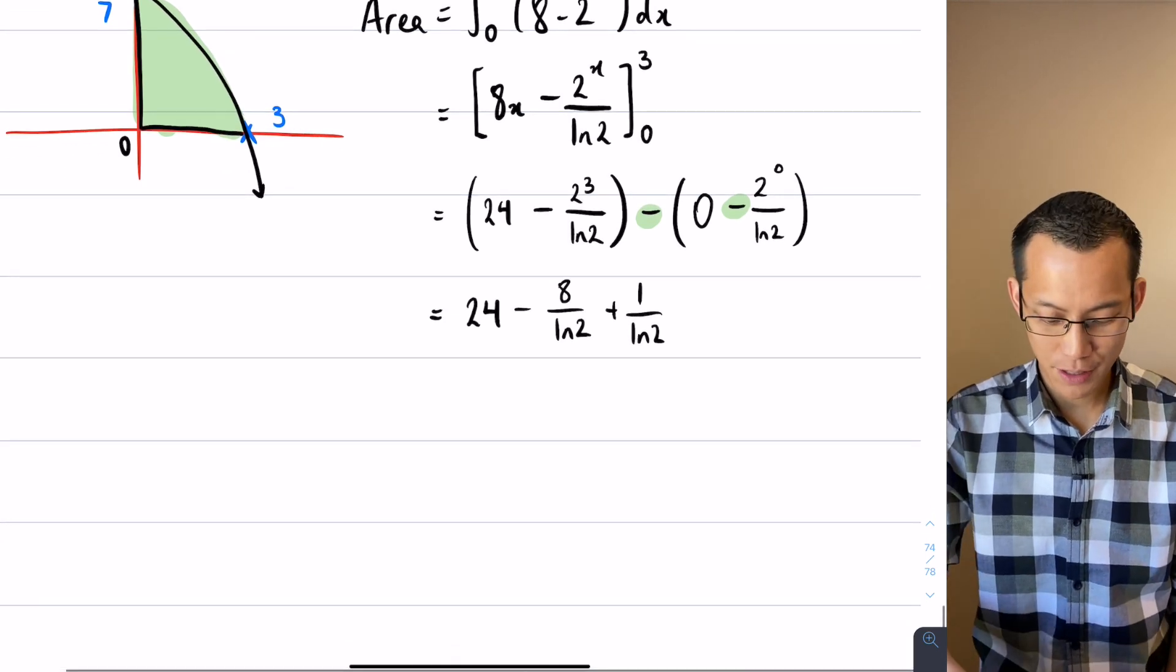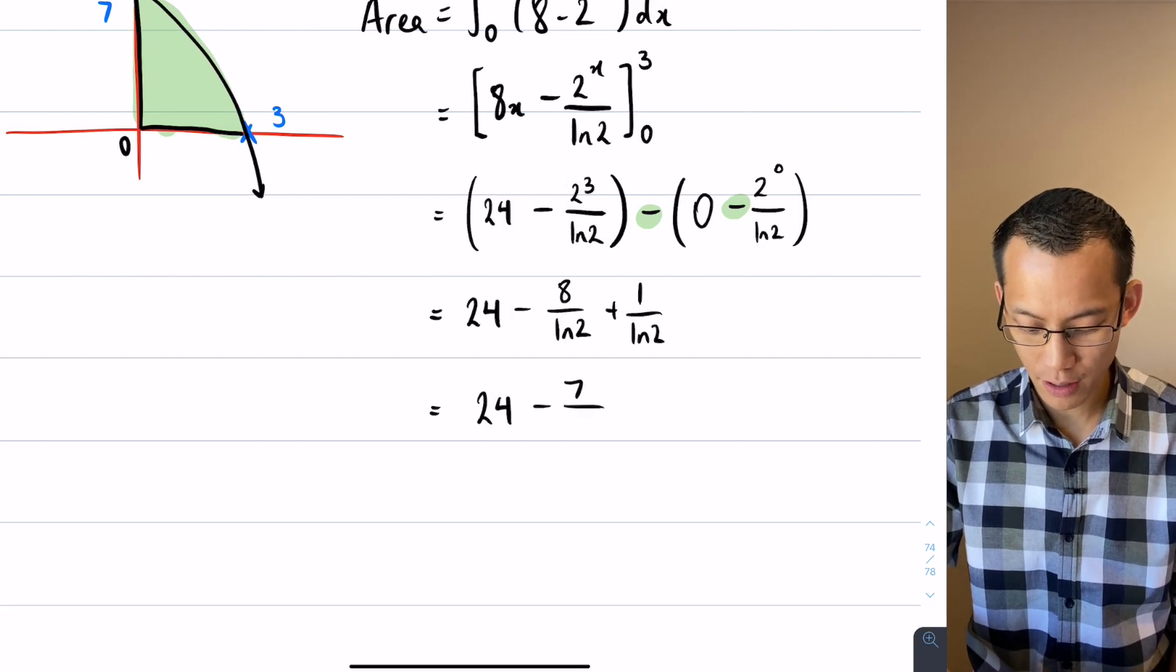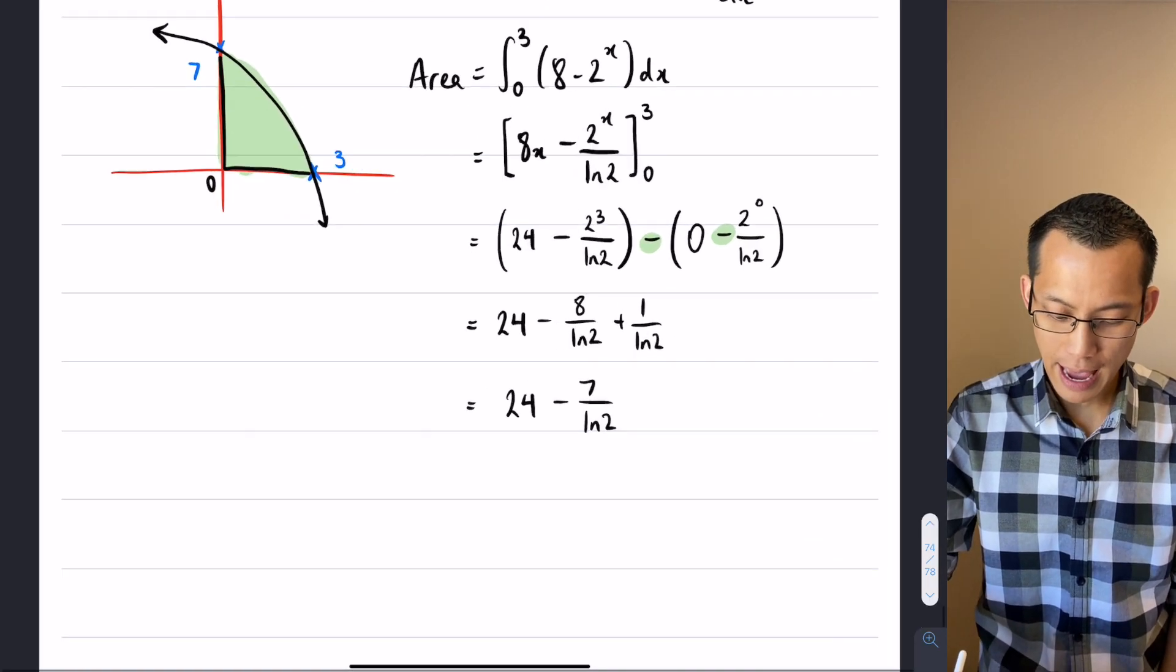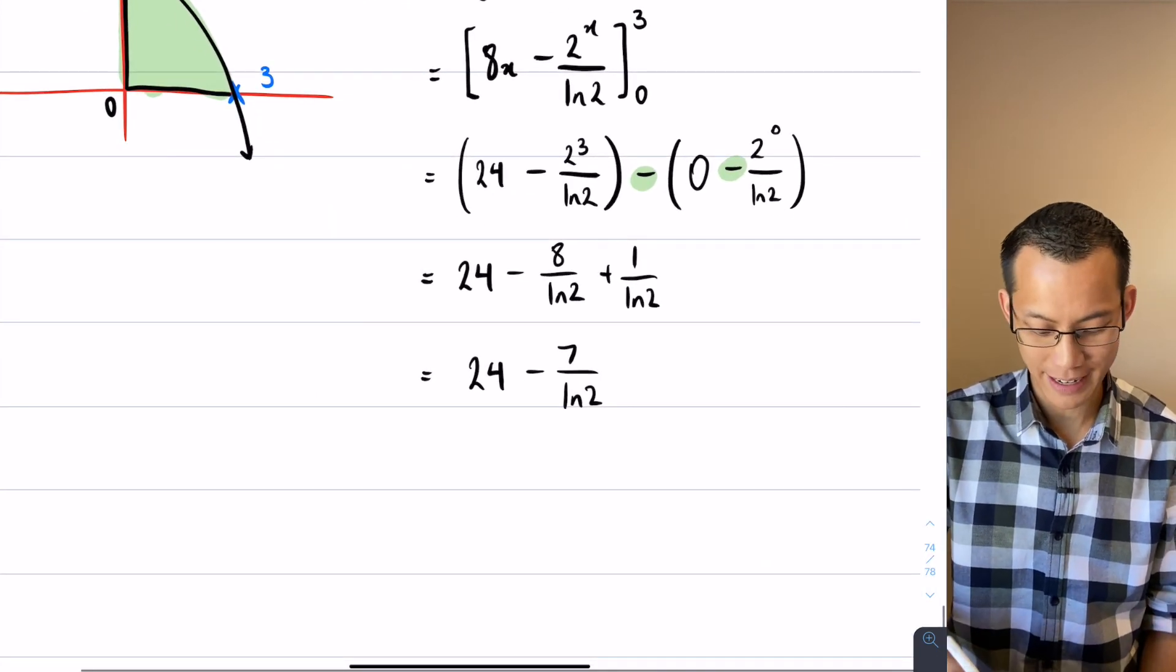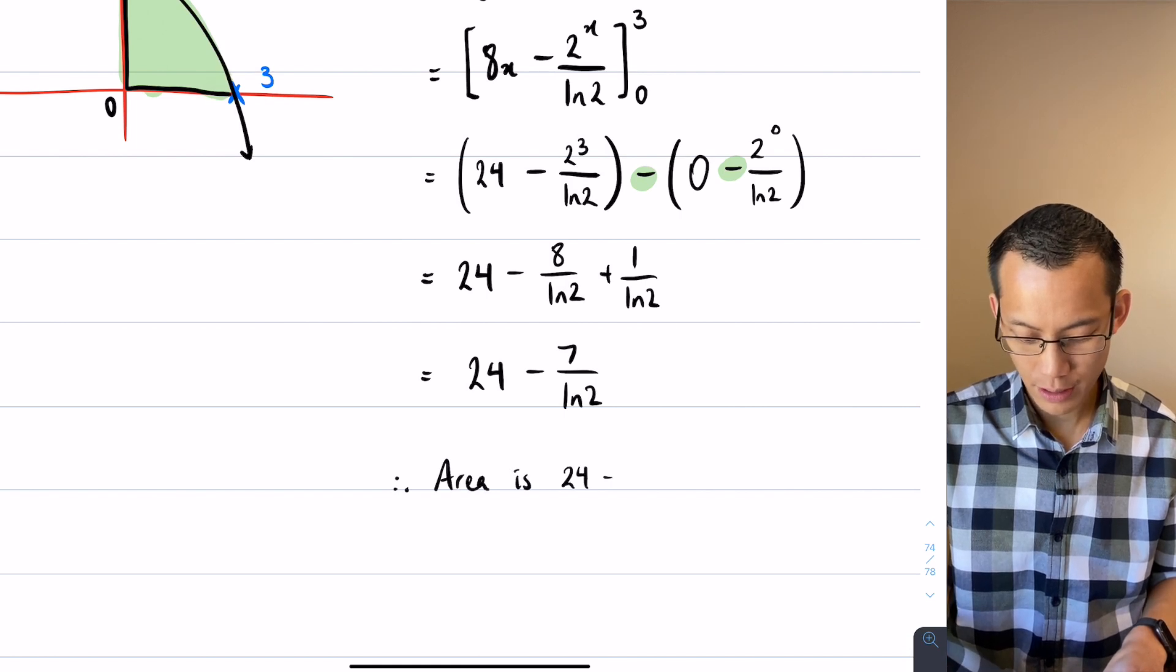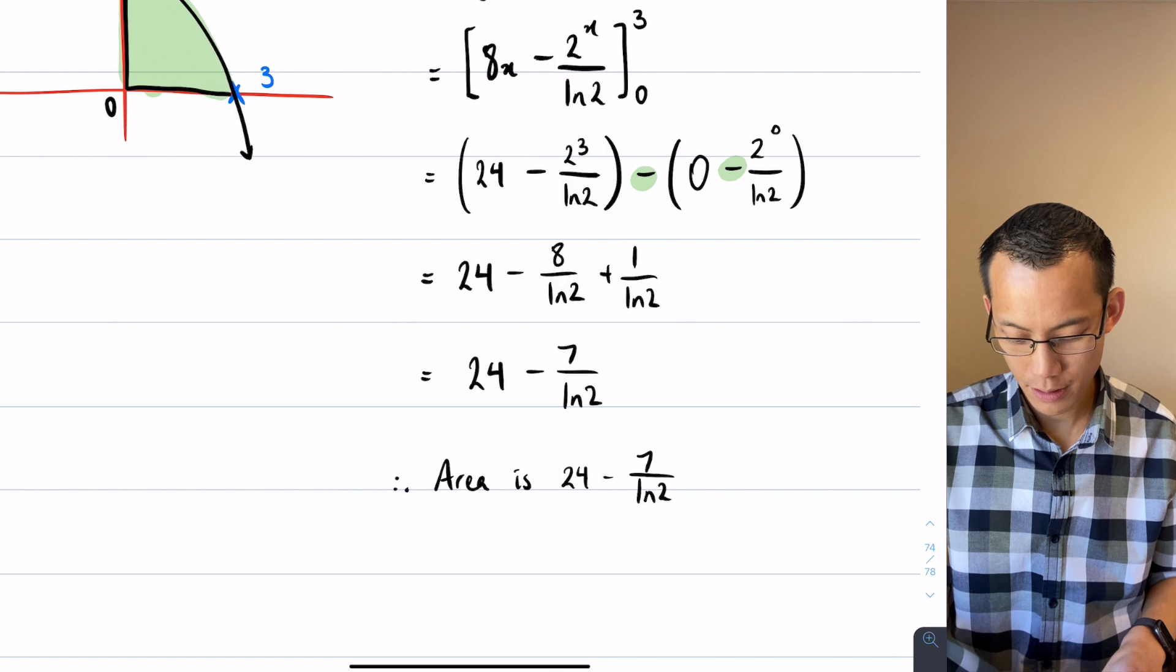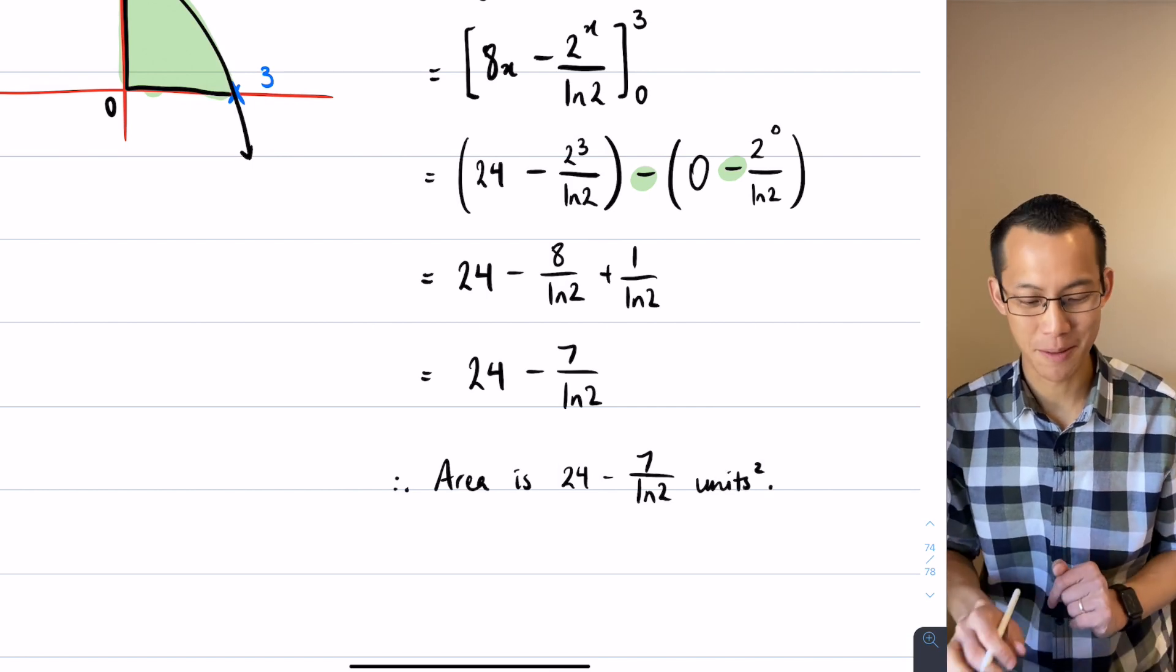Two fractions, common denominator. So I'm going to get 24 take away 7 on log 2 and this is an area. So therefore I'm going to conclude without approximating by saying, therefore the area is 24 take away 8 over log 2 square units. Happy times.